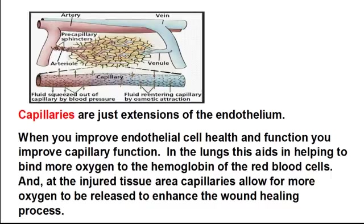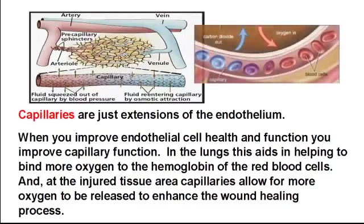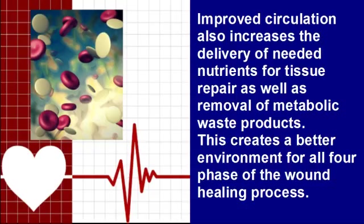Additionally, your capillaries are just extensions of the endothelium. When you improve endothelial cell health and function, you improve capillary function. In the lungs, this aids in helping you bind more oxygen to the hemoglobin of the red blood cells. And at the injured tissue area, your capillaries allow for more oxygen to be released to enhance the wound healing process. Improved circulation also increases the delivery of needed nutrients for tissue repair, as well as removal of metabolic waste products. This creates a better environment for all four phases of the wound healing process.